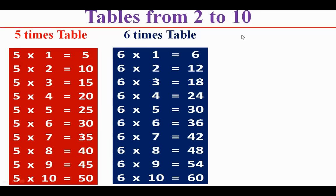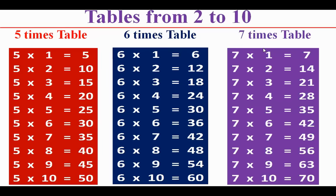7 times table: 7 1s are 7, 7 2s are 14, 7 3s are 21, 7 4s are 28, 7 5s are 35, 7 6s are 42, 7 7s are 49, 7 8s are 56, 7 9s are 63, 7 10s are 70.